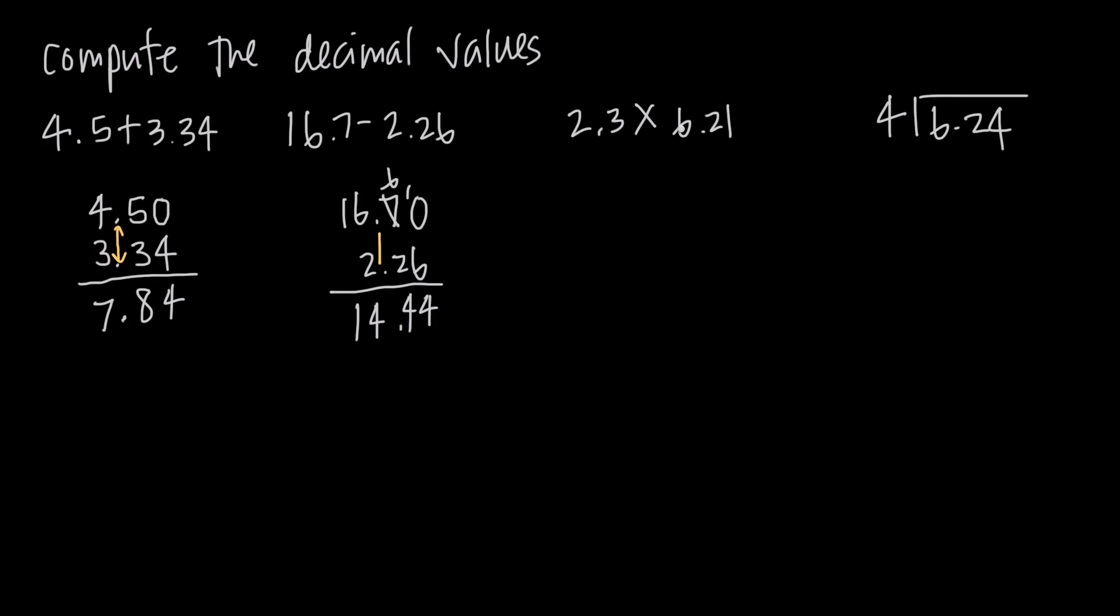Now when it comes to decimal multiplication, this is going to be slightly different. We're going to, when we multiply, ignore the decimals for the first part of our problem. So let's take the number with more digits. This one, 6.21, has 3 digits. This 2.3 only has 2 digits. We'll take the one with the larger number of digits and put that at the top, so 6.21.